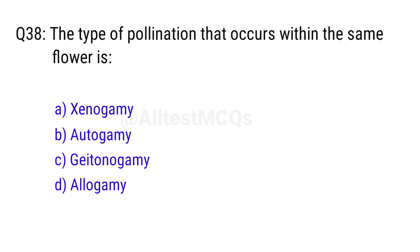Q38. The type of pollination that occurs within the same flower is? Right answer is option B, autogamy.